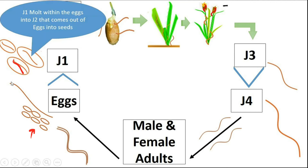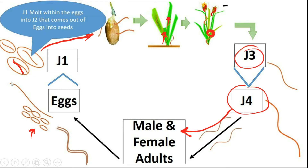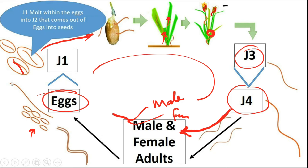J1 develops into J2 inside the egg. J2 emerges outside, climbs up the plant, and infects the leaves. Inside the plant it develops into J3 and J4. J4 develops into adult males and females, mating occurs, eggs are produced, and the cycle continues. This is the life cycle of the nematode.